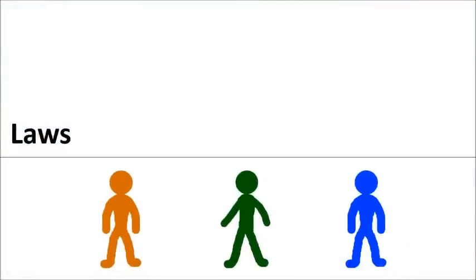There are multiple producers of law in this society. No single producer of law is in a privileged position. There is no ruler and no one is ruled. Everyone is of equal status with respect to the laws.